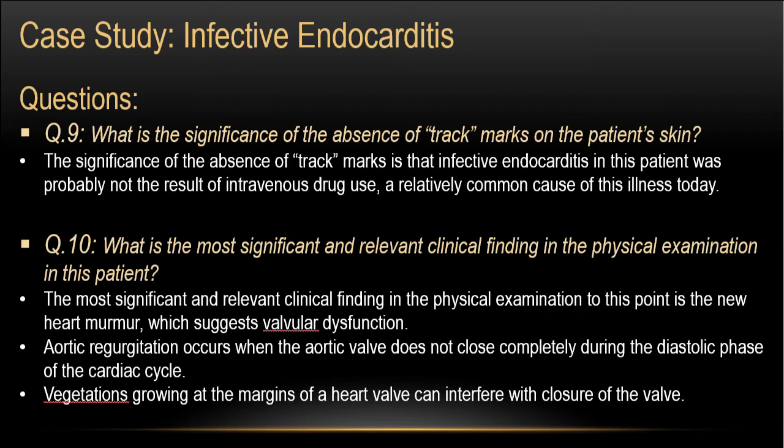Aortic regurgitation occurs when the aortic valve does not close completely during the diastole phase of the cardiac cycle. Vegetations growing at the margins of the heart valve can interfere with the closure of the valve, resulting in aortic regurgitation. When you have a valve defect, you're going to have a murmur.